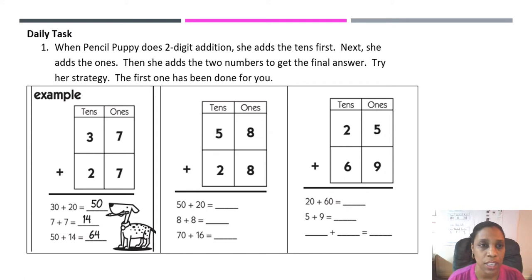Now let's look at one of the activities from our week one work packet. It's a daily task. When Pencil Puppy does two-digit addition, she adds the tens first. Next, she adds the ones. Then she adds the two numbers to get the final answer. Try her strategy. The first one has been done for you.